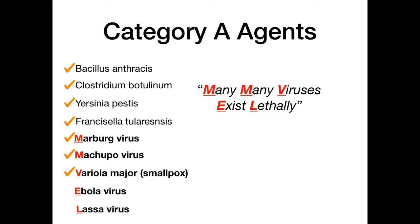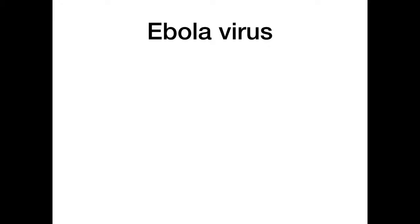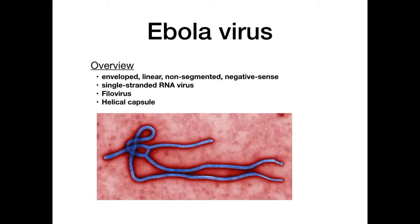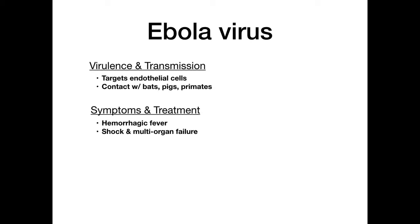Ebola is an enveloped, linear, non-segmented, negative-sense, single-stranded RNA filovirus with a helical capsid — if you see that characteristic image on your exam, the answer is Ebola. It targets endothelial cells and is transmitted through contact with bats, pigs, or primates that carry the virus. Ebola causes hemorrhagic fever that rapidly progresses to shock and multi-organ failure, and is absolutely lethal. Not much else to memorize beyond its viral makeup.